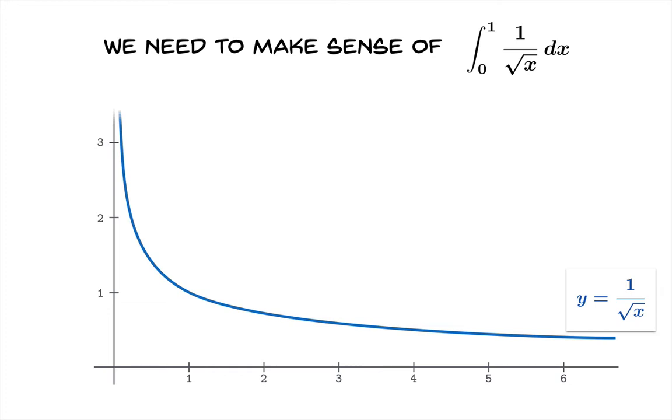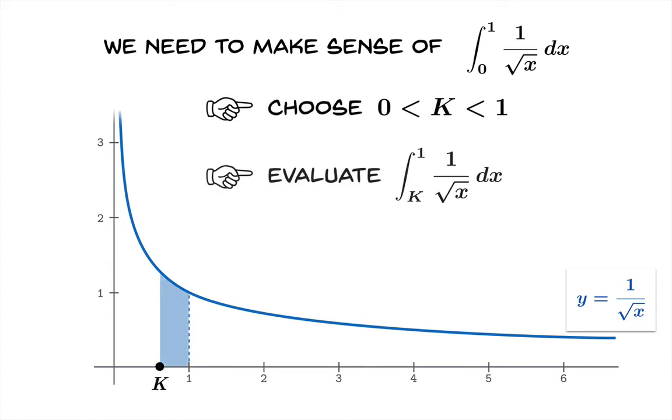So what do we do to make sense of this? Well as we saw with improper integrals on semi-infinite intervals we will sort of sneak up on this unknown case through cases that are well known to us. So to be specific let's choose an argument between 0 and 1 we'll call it k. We'll evaluate the integral from k to 1 which there's no controversy here we know how to do that and then we'll look at the limiting value as k approaches 0 from the right of that integral.